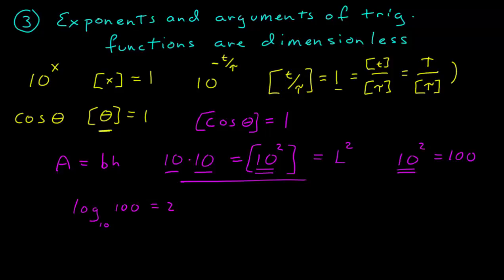So, in this case, the 10 had dimension. The 100 had a dimension. But the 2 did not. So, in that case, for a logarithm, the base of a logarithm could have dimension. The argument of the logarithm could have dimension. But the result of the logarithm is dimensionless.